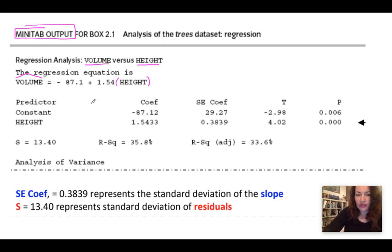So the first thing is, your y-intercept is always in the row where it says constant, so that means under coefficient. So the y-intercept here is negative 87.12. Recall that the equation is given as y-hat, which in this case is the volume, equals the y-intercept plus the slope times our explanatory variable.